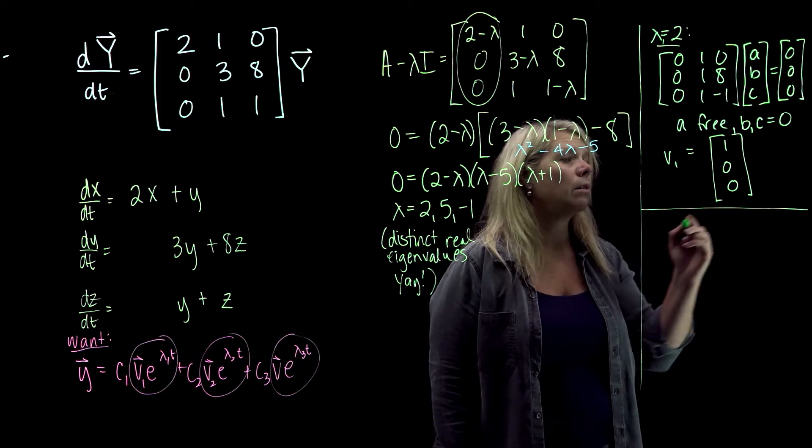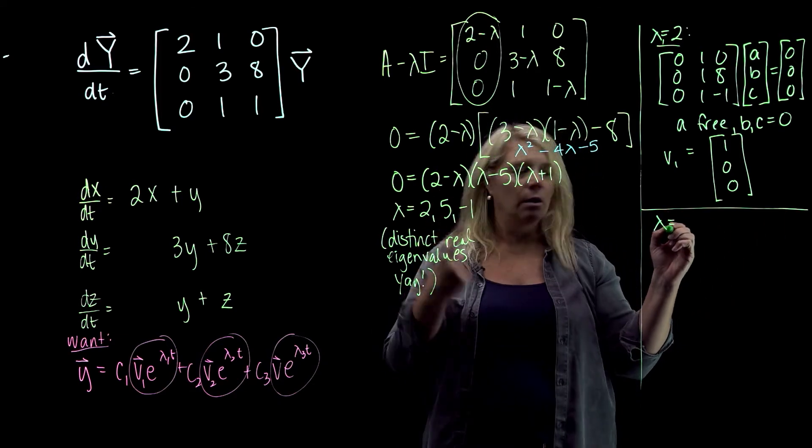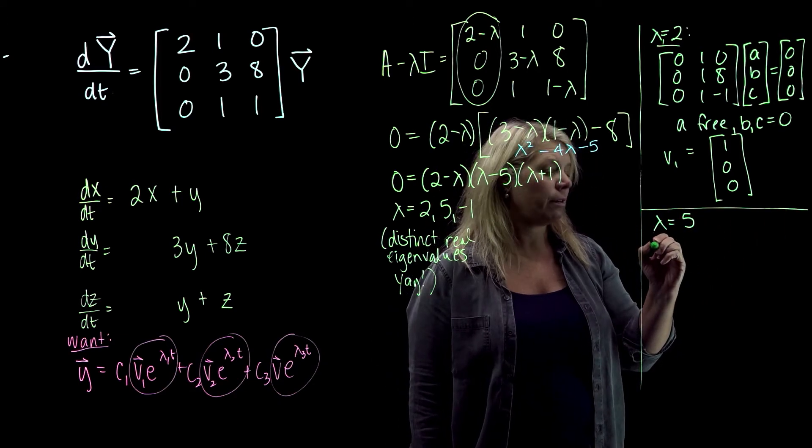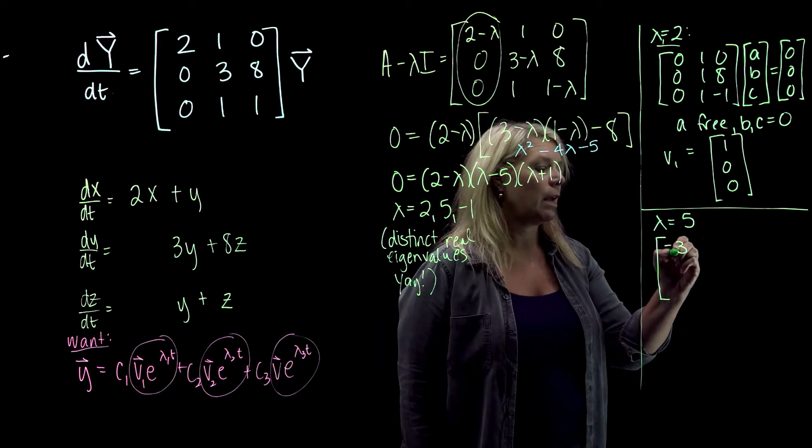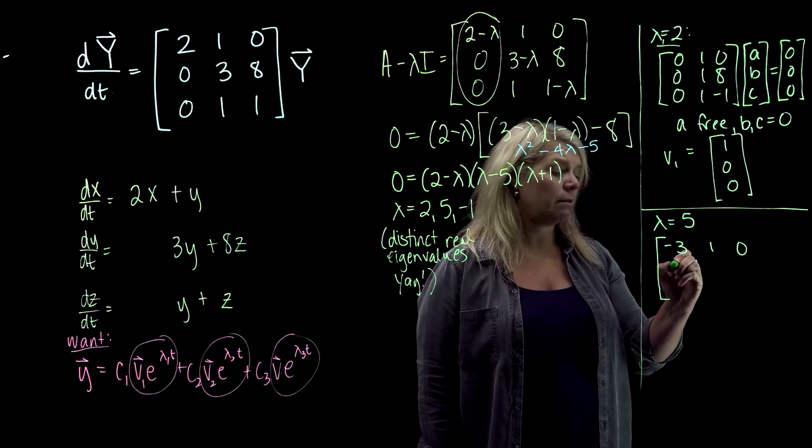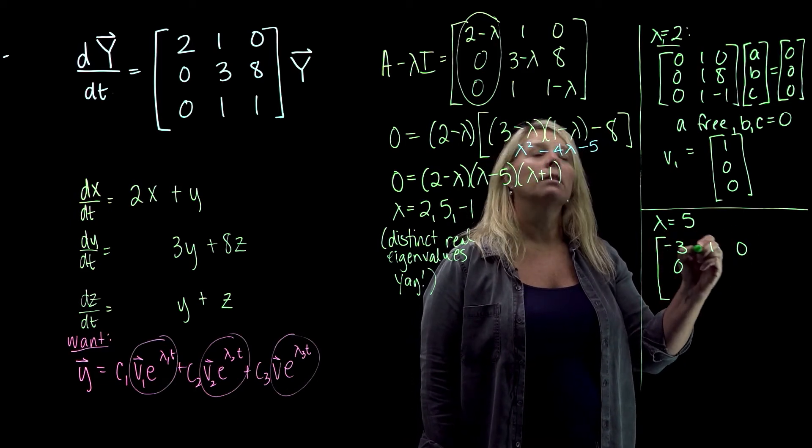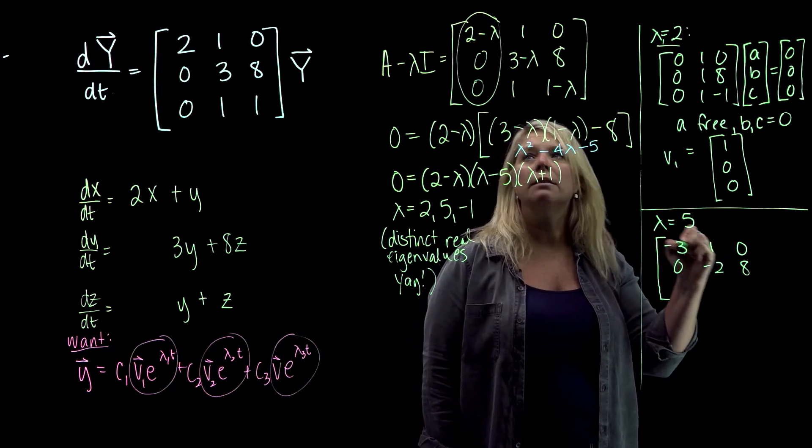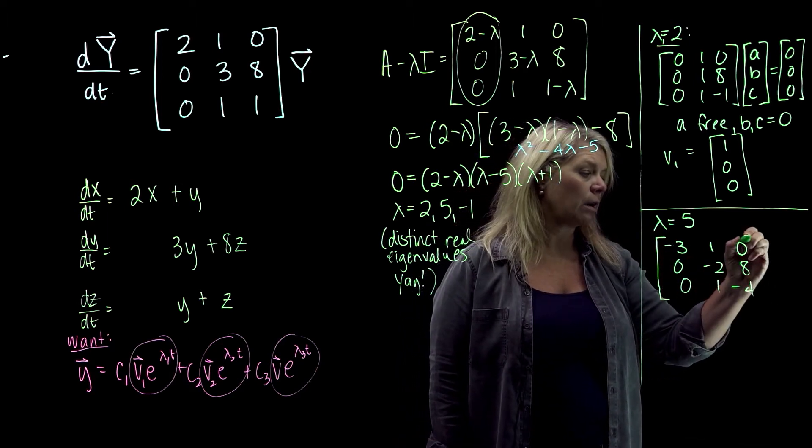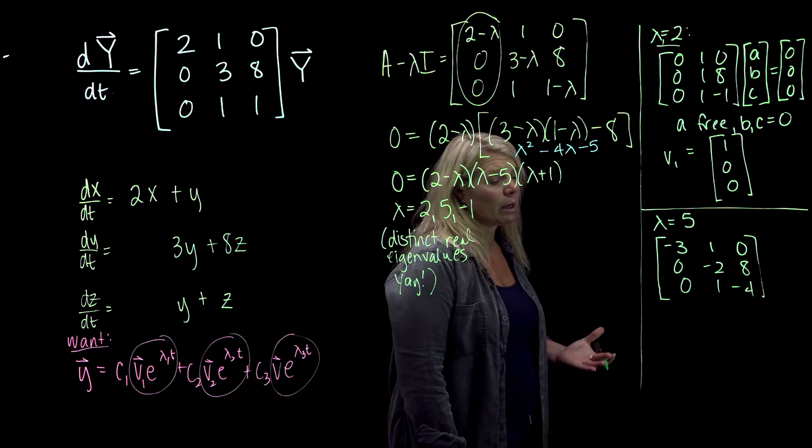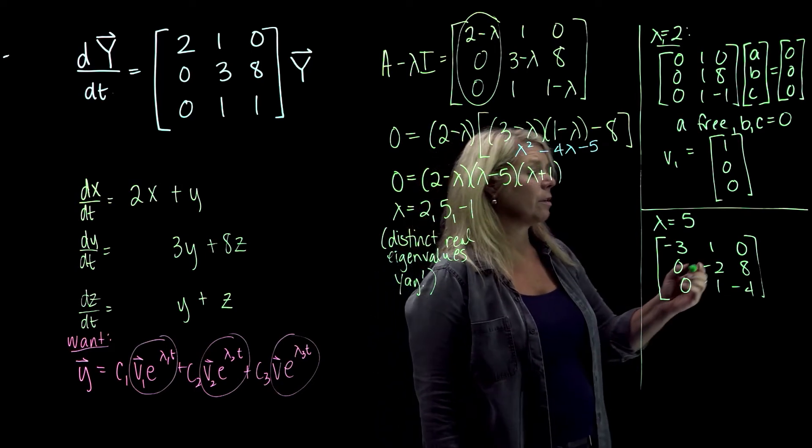Okay, so I will just do the same thing where lambda equals 5. And so our matrix, when I put in lambda equals 5, will have [-3, 1, 0; 0, -2, 8; 0, 1, -4]. Alright, and what I'm looking for here again is a basis for the null space.